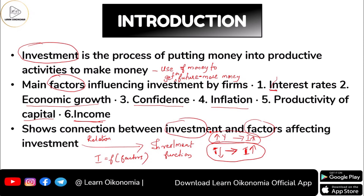Income and interest rate are considered independent variables; investment depends on both income and interest rate. Moving to the investment function, even though interest rate and income are both parts of investment, we are discussing investment function by considering income specifically — investment as a function of income.